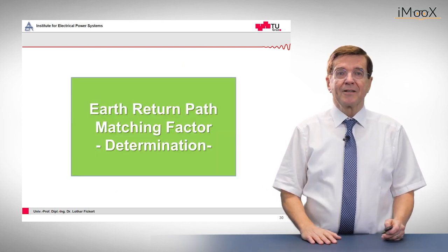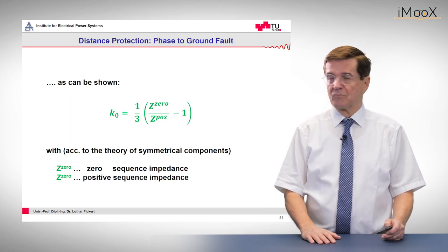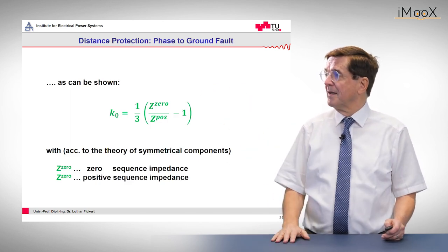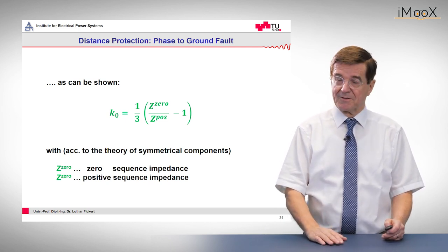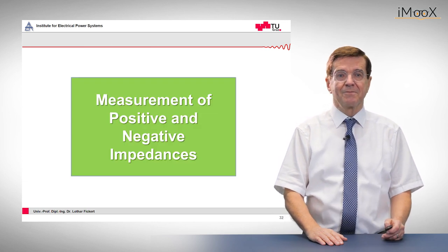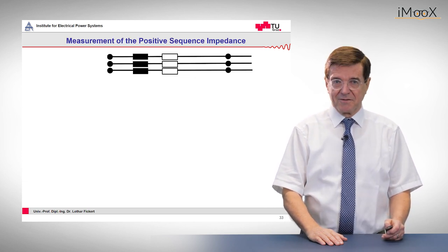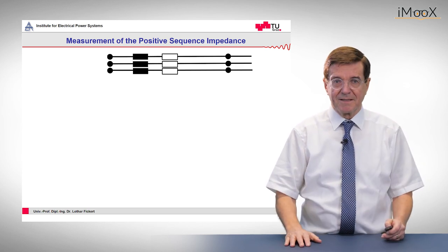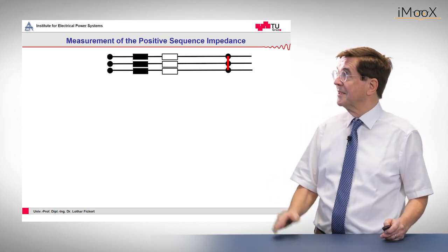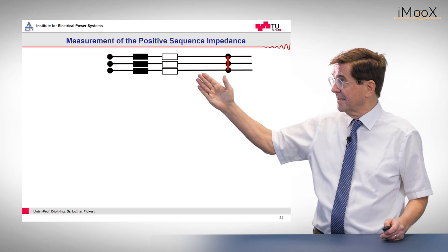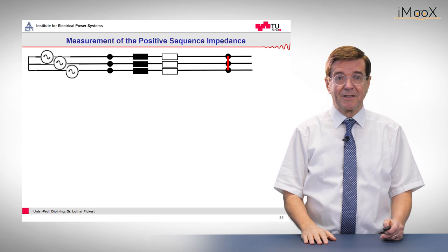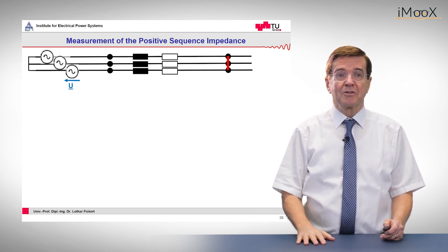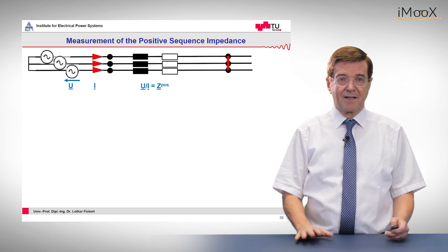So how can this factor be determined? We have seen this formula, and now we need two components: the zero sequence impedance and the positive sequence impedance. The positive sequence impedance is the normal load flow impedance, determined by short-circuiting the line at the end, then applying a symmetrical voltage at the beginning, and determining the quotient between the voltage and the current. This gives the positive sequence line impedance.